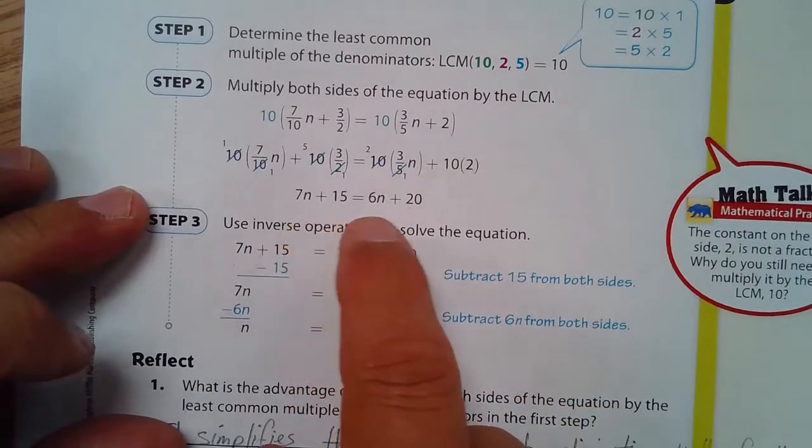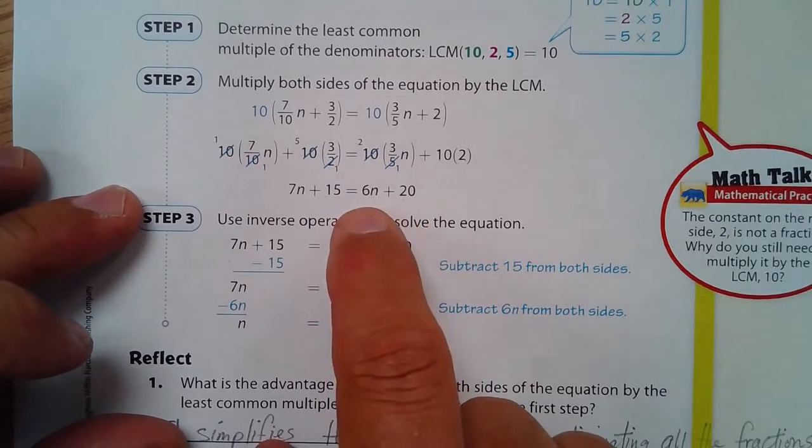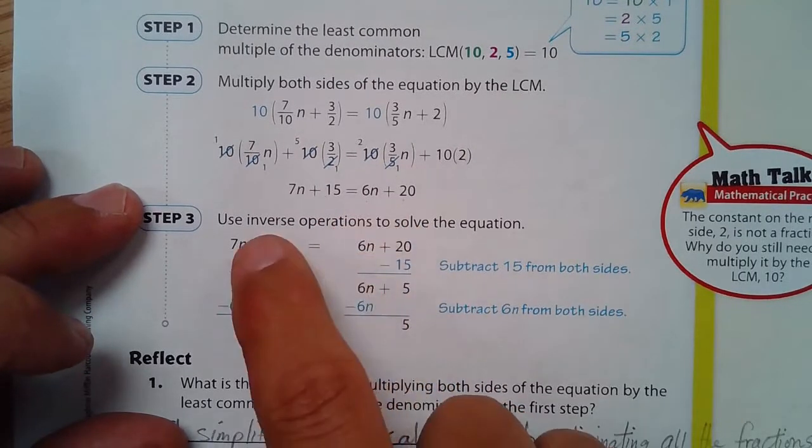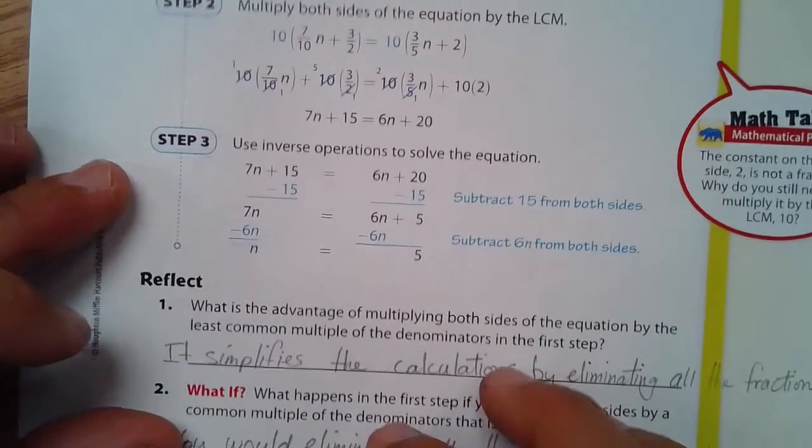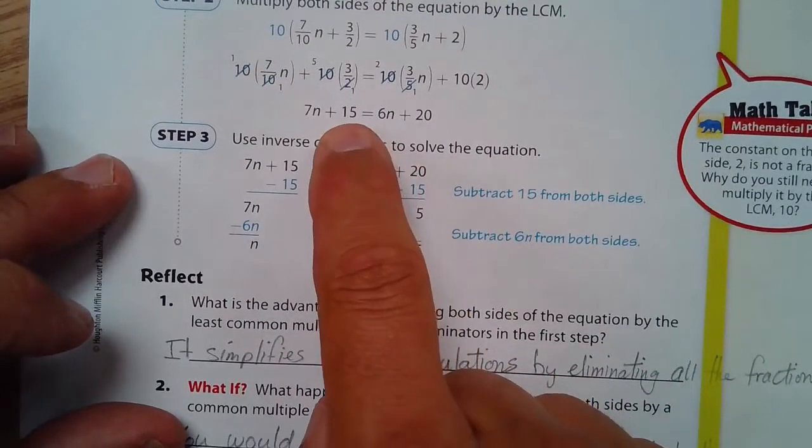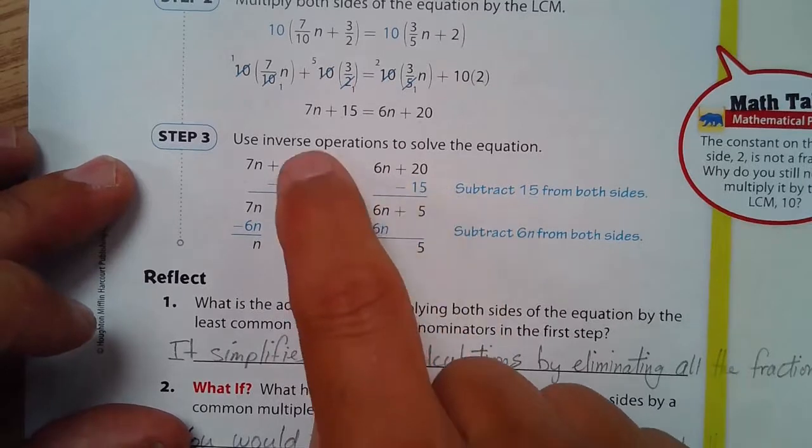And the advantage now is we have no fractions and we could do what we did in 18.1. We use inverse operations to solve the equation.